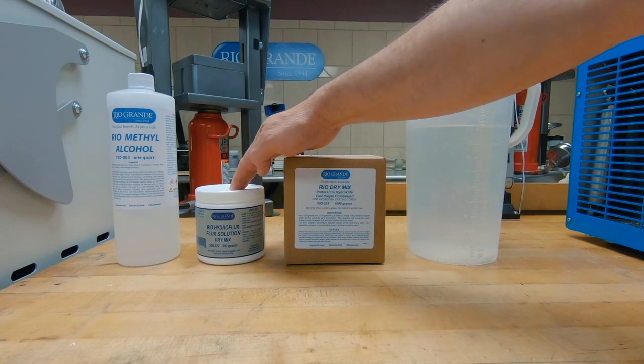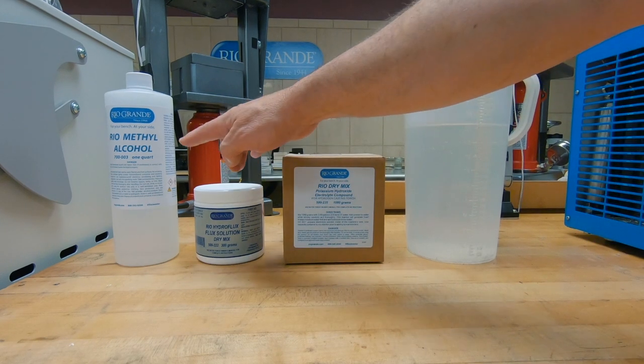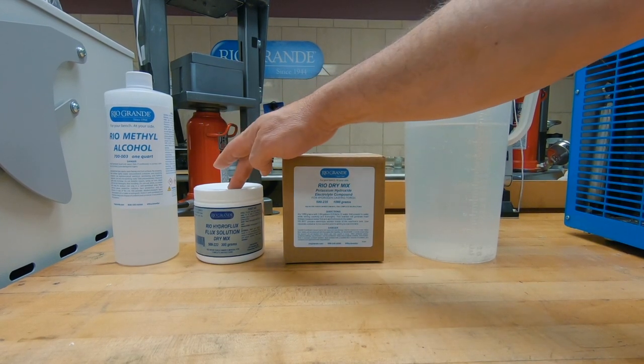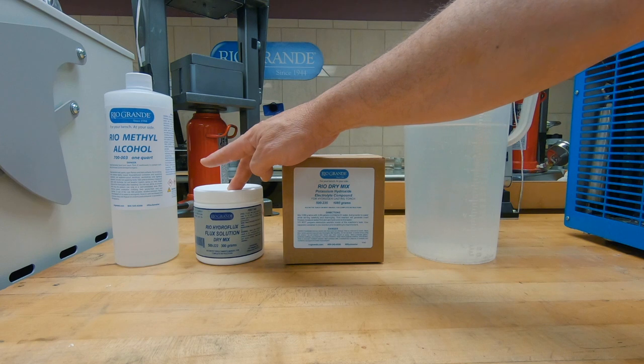The flux solution. You're going to mix the flux solution with the methyl alcohol, 15 to 20 grams of flux solution to one quart of methyl alcohol.